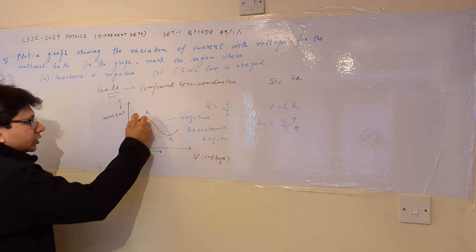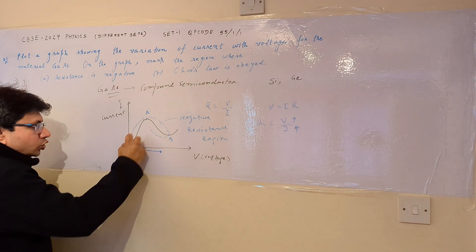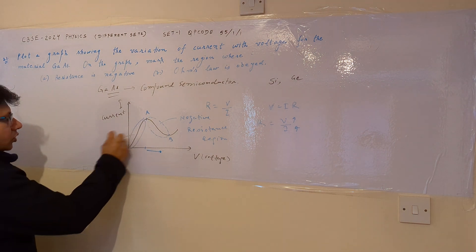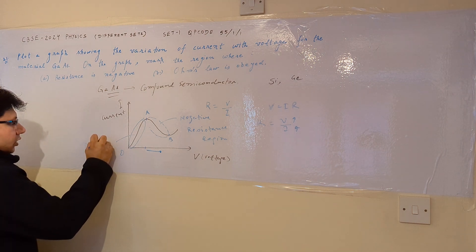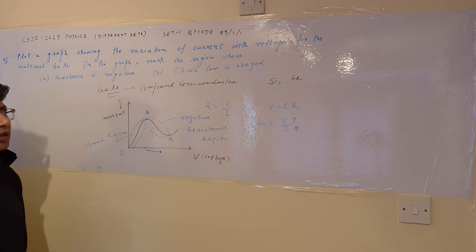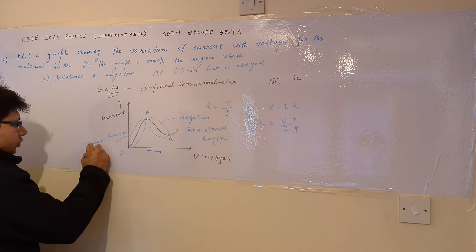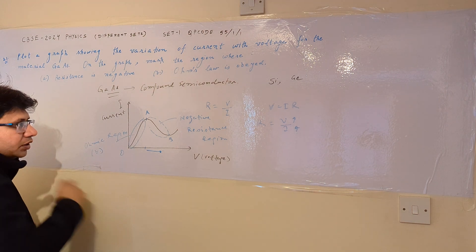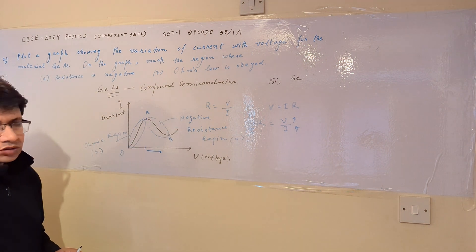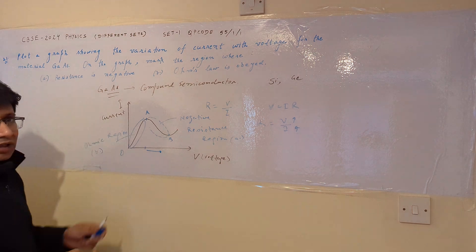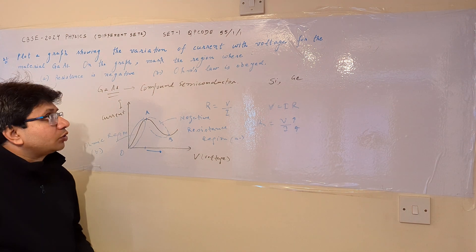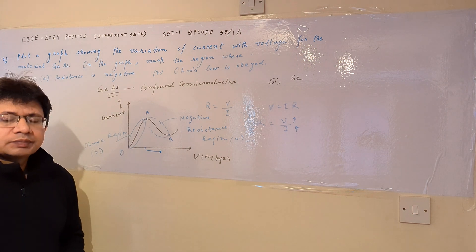The region from O to A is the positive resistance region, also called the ohmic region — the region where Ohm's law is obeyed. This is the answer to Part B. So we mark these two regions on the graph: the ohmic region (O to A) for Part B, and the negative resistance region (A to B) for Part A. Hope you understand the solution, thank you.